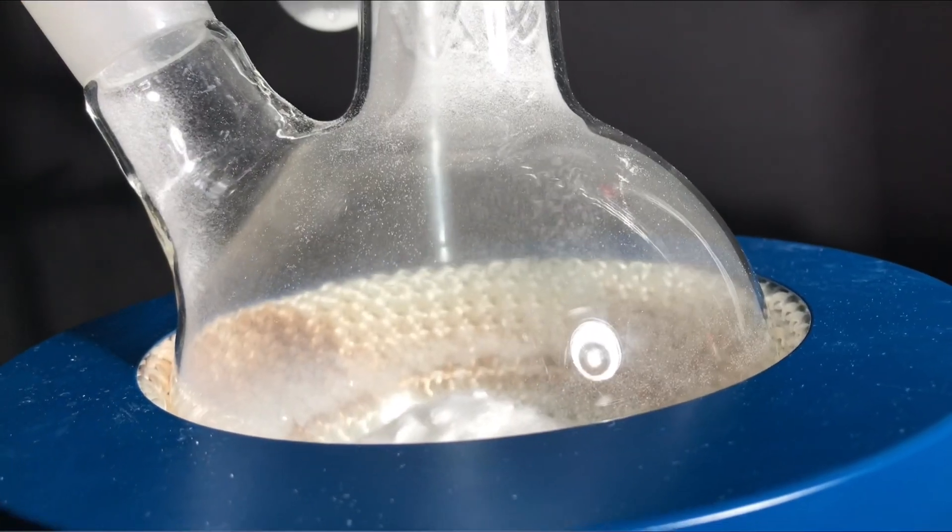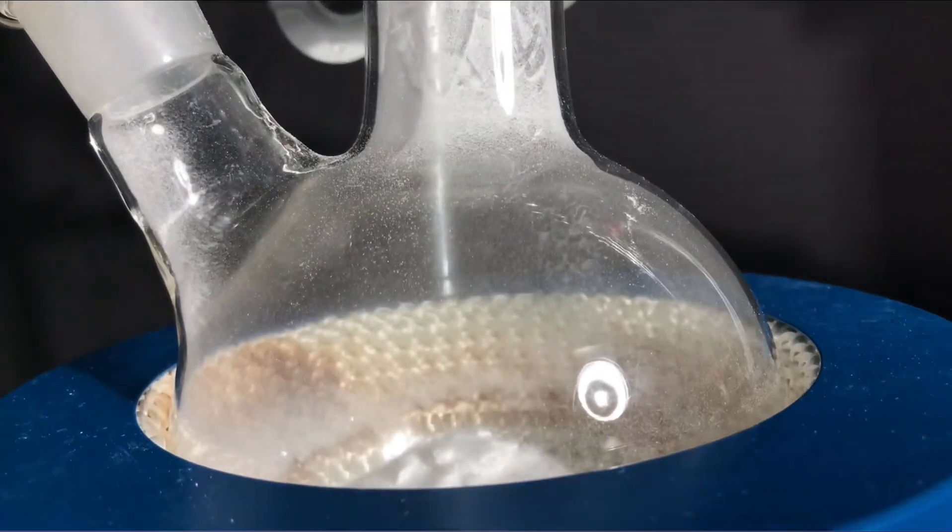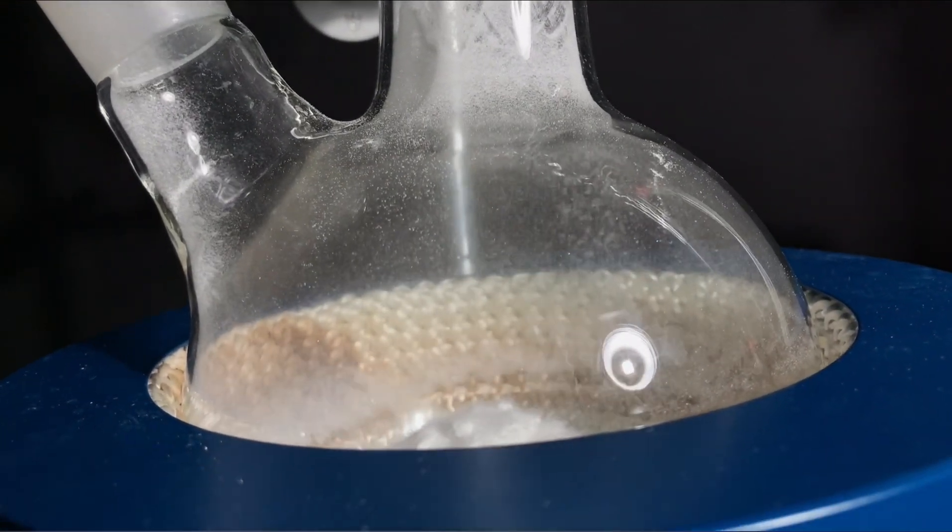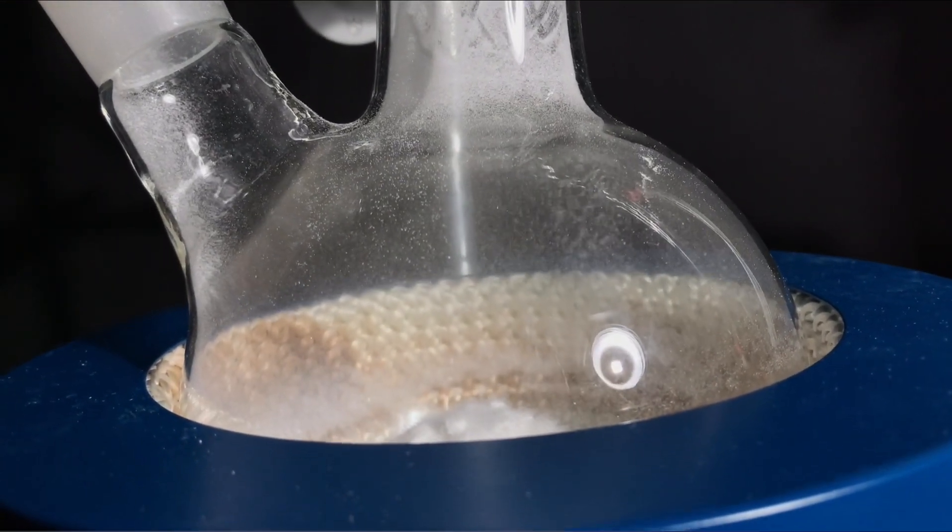After a while, crystals started to form and it looked like it was snowing in the round bottom flask. The snowflakes, however, are not made from phenol.